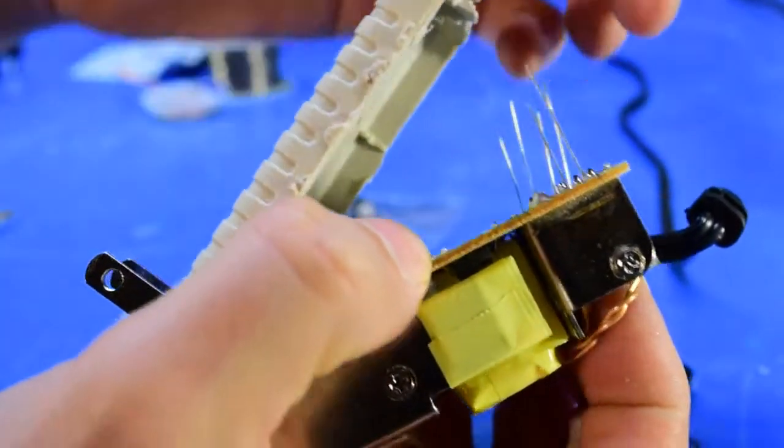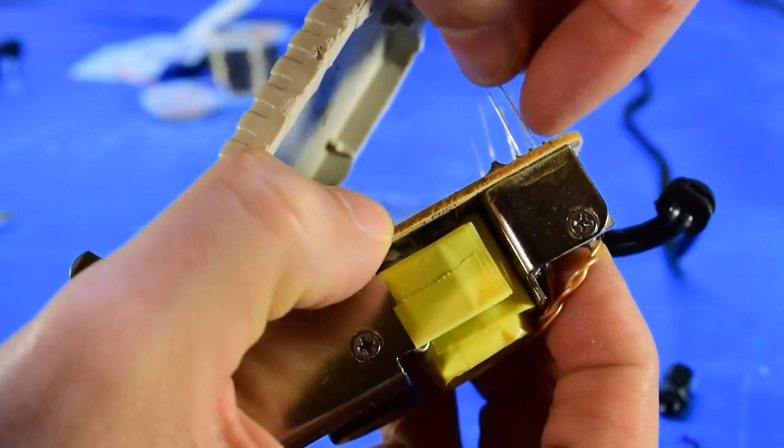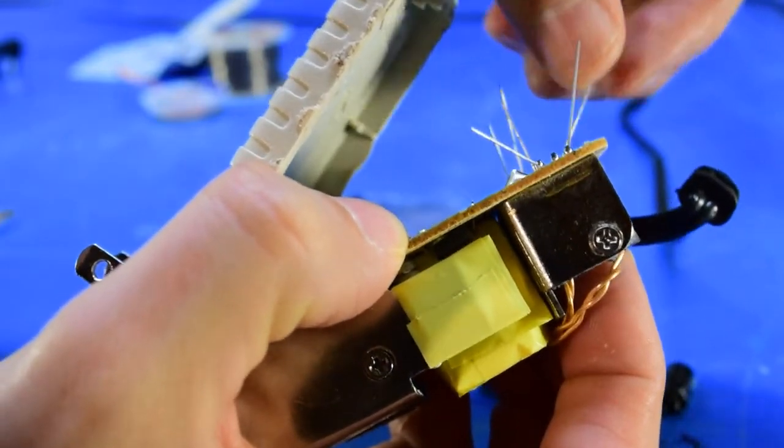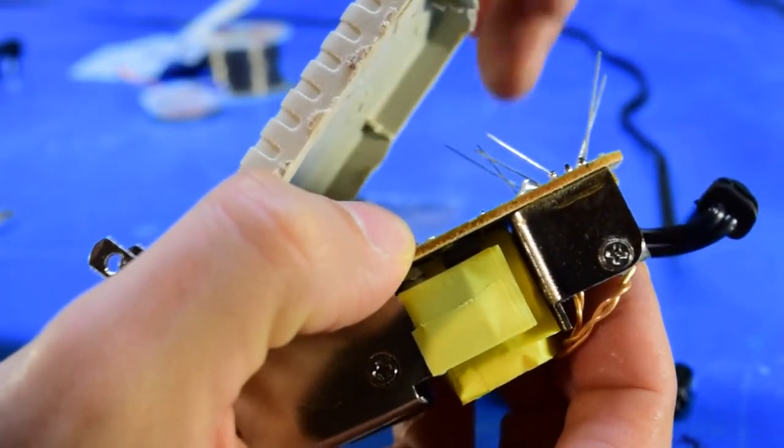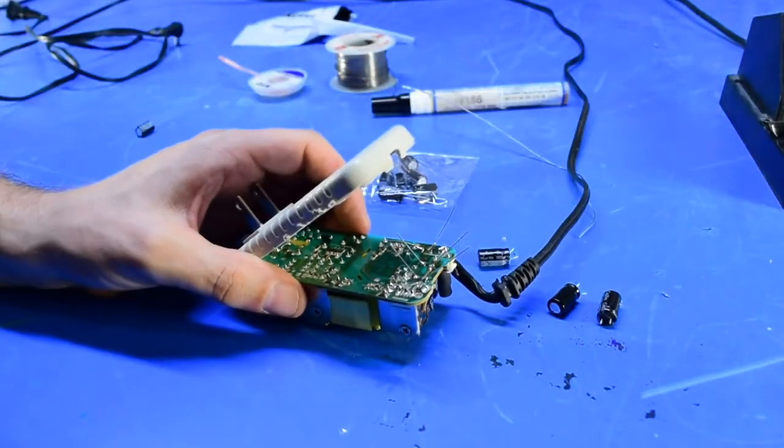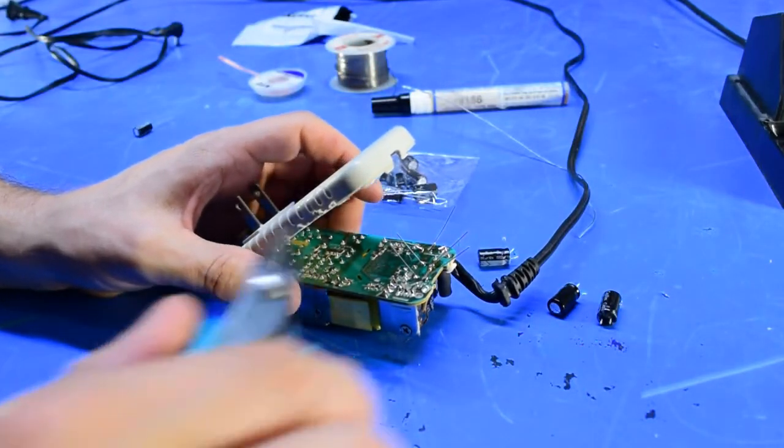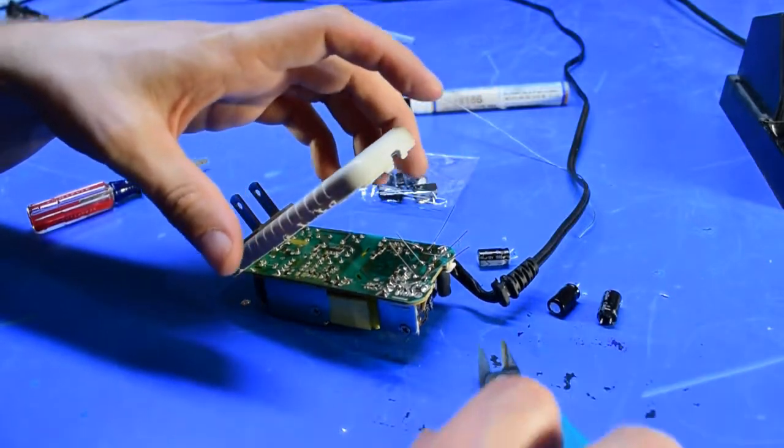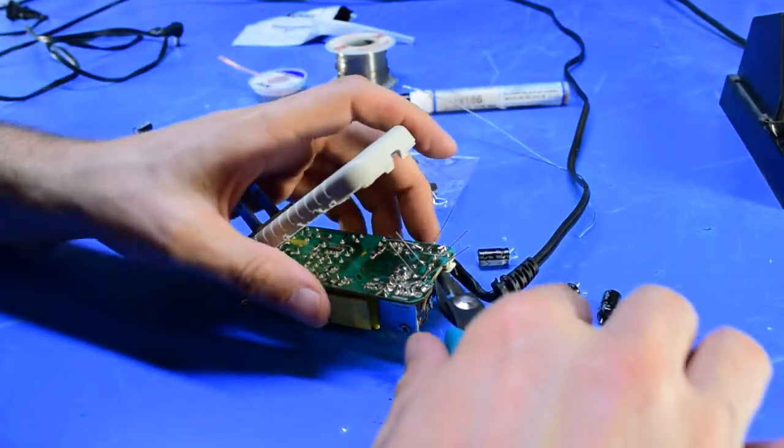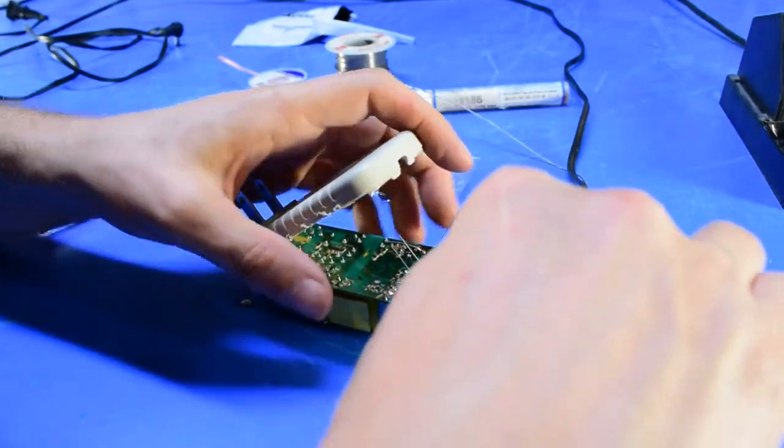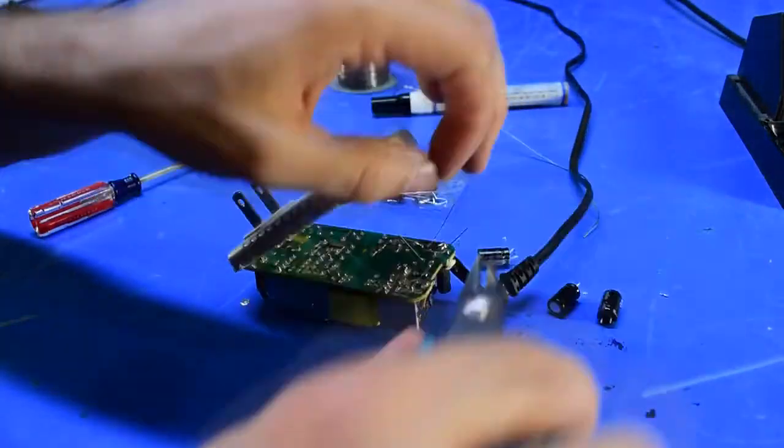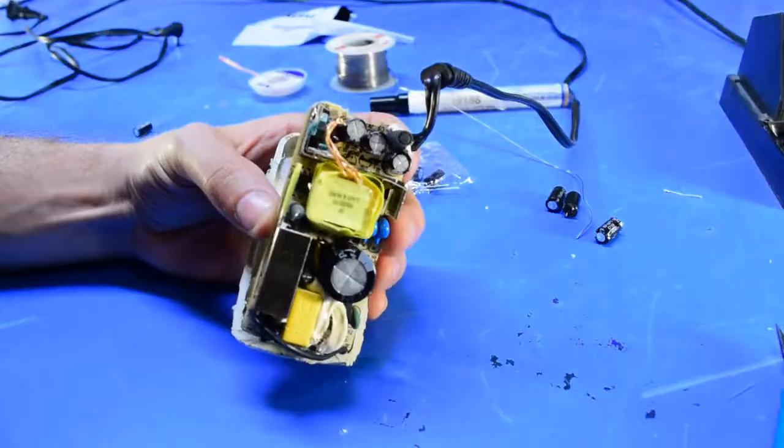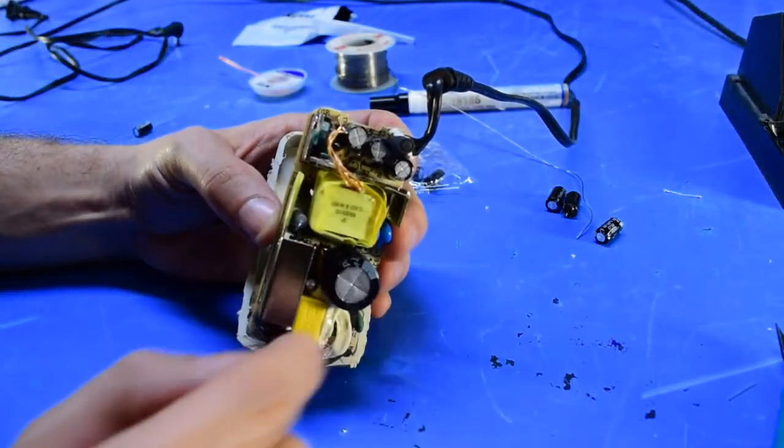So now with those in place, I'm just going to bend these leads over a little bit to just help hold these caps in place while I solder them in. Okay, I might have had the camera out of sequence there, I'm not sure if I got the soldering in there or not, but if I didn't, then I apologize for that. So now I'll just clip the leads. So I've got the three caps up here replaced.